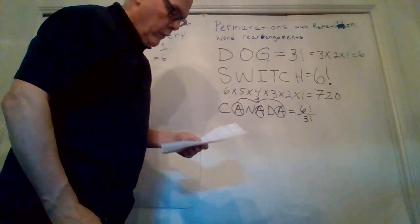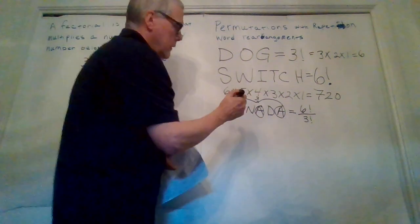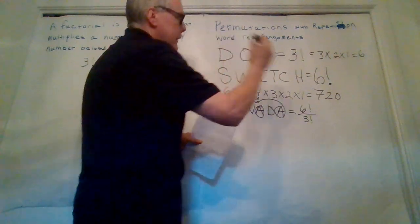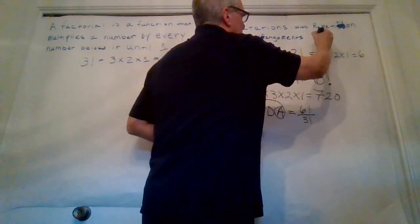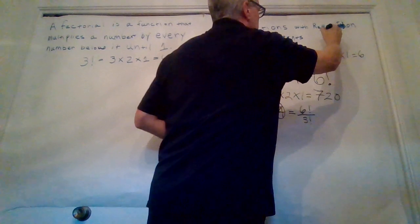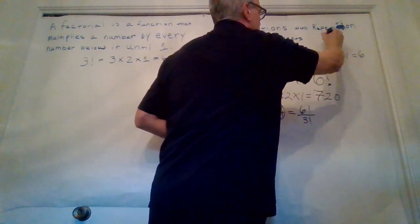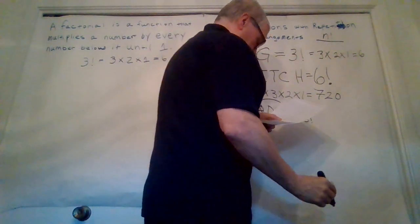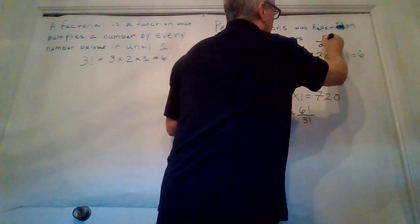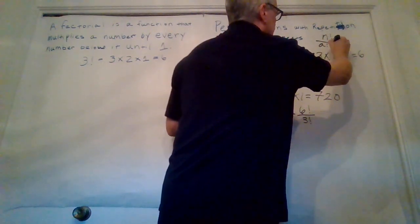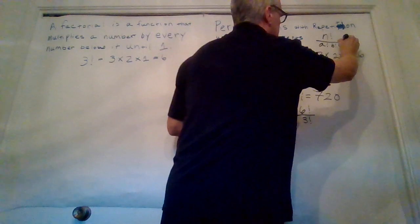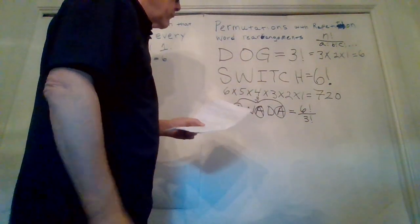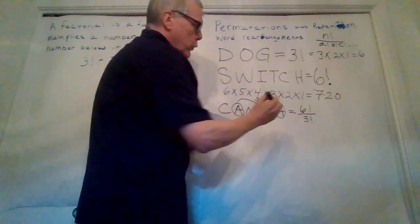So our formula for doing this, the formula that we're going to look at is going to be N factorial divided by A factorial times B factorial times C factorial, and so on down the line, depending on how many repeated letters we have.